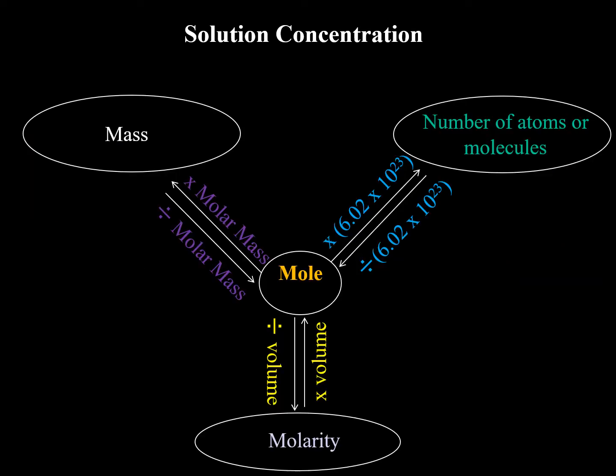This is a roadmap I like to introduce in my lecture classes. We have moles in the middle. If we want the mass, we multiply by molar mass. If we want the number of atoms or molecules, we multiply by Avogadro's number. And the newest part: if we want molarity and we know the moles, we divide by the volume.